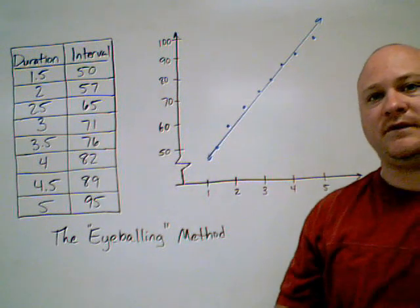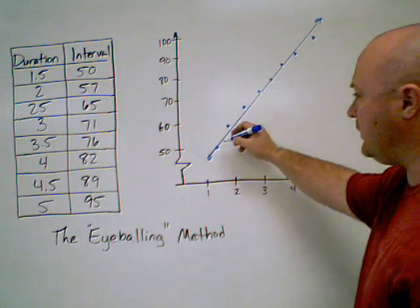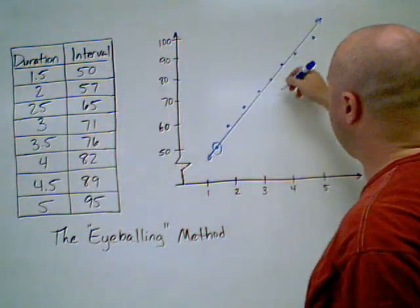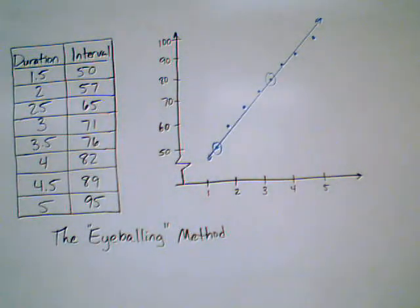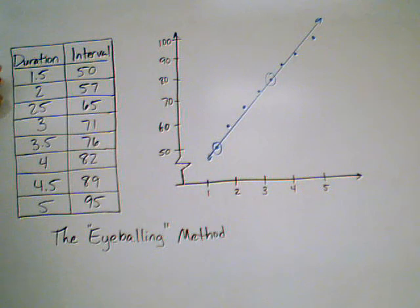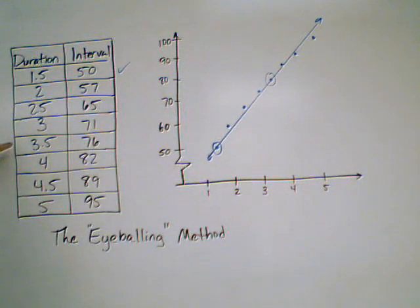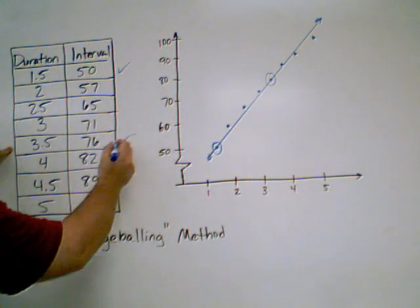Now the object is to find a line where I have a couple of points on the line that I can compare. I've got this point here and I've got this point here. On my table, those points are the first one and this one, 3.5, 76.